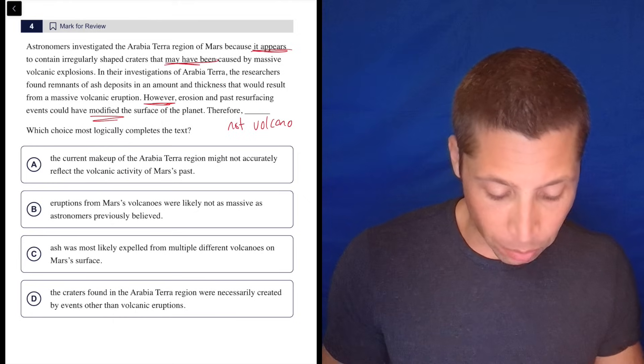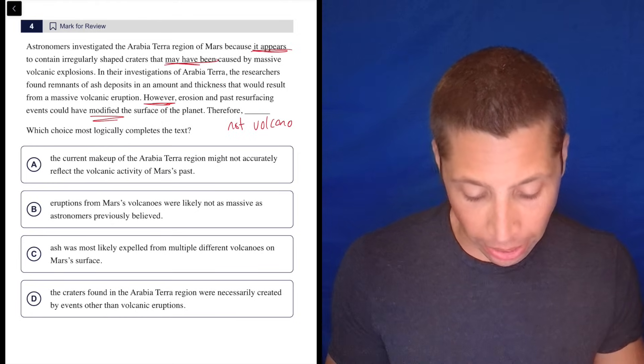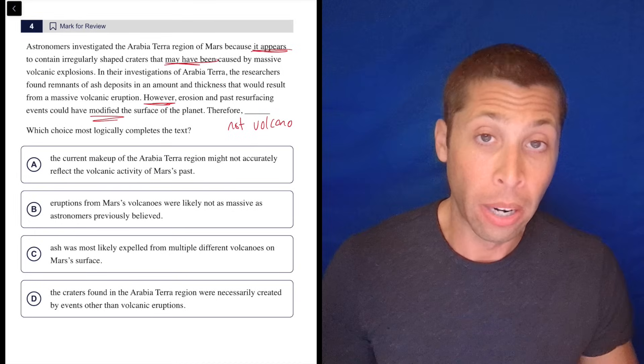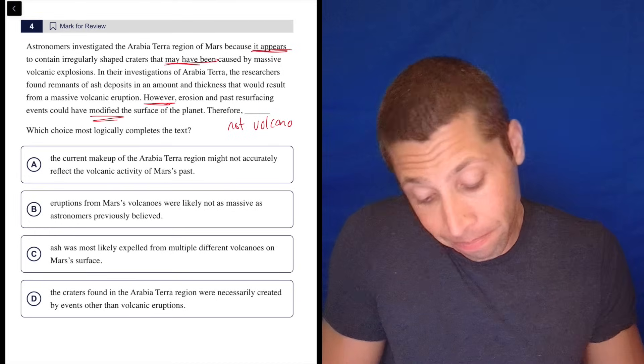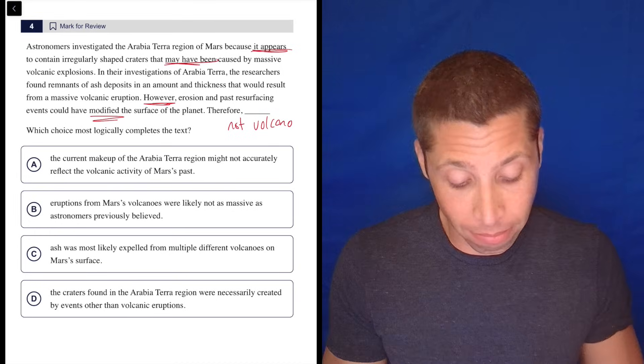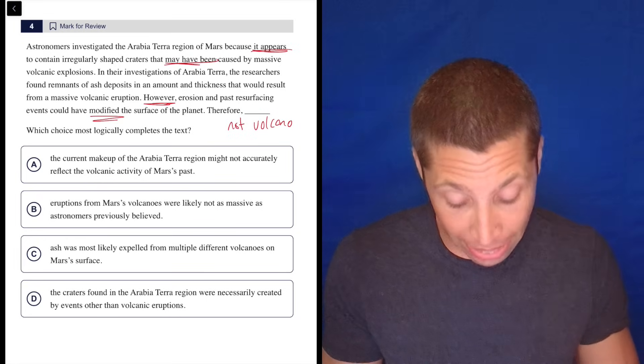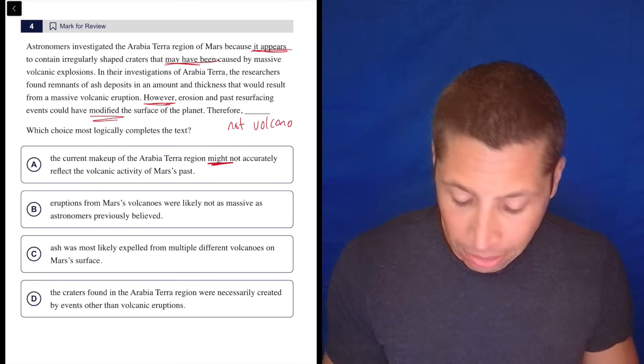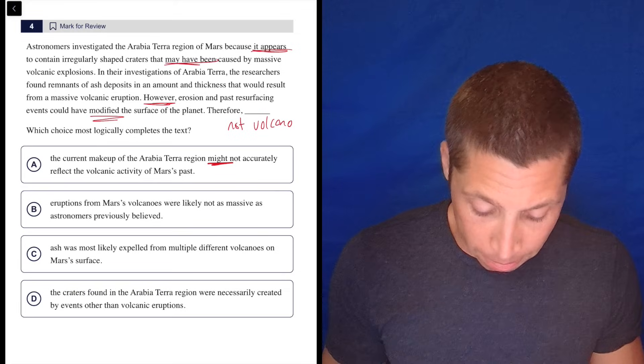So A, the current makeup of the Arabia Terra region might not accurately reflect the volcanic activity of Mars's past. Right, because maybe the erosion or whatever changed it. That's a fancy way of kind of saying, yeah, it's not a volcano. It might be something else. And notice they use the word might. I like that. Let's look at the hiccups.